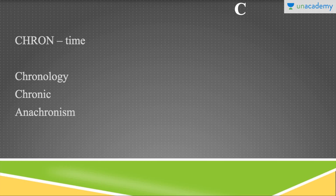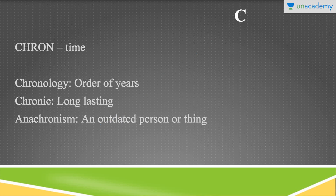For Chron, meaning time, the words I have used are chronology, chronic, and anachronism. Chronology is an order of years — for example, if we want to know the chronological order in which the BJP was in power in India, we would start from 1947 and calculate through to 2017. Chronic means long lasting — doctors often say this is a chronic sickness. Give me a synonym for chronic — that's the third homework I'm giving you.